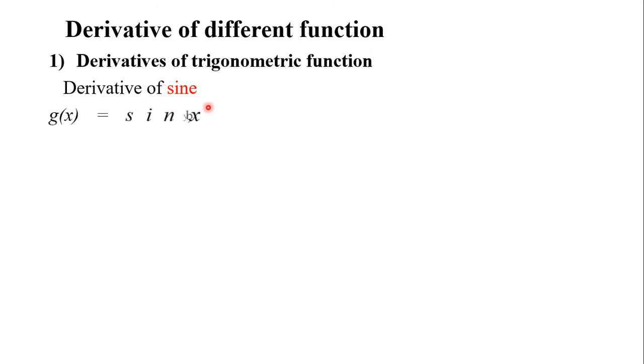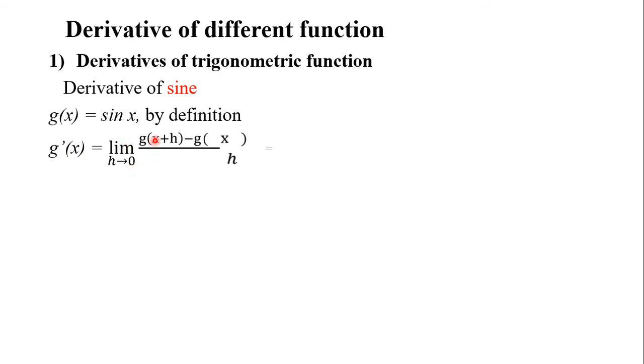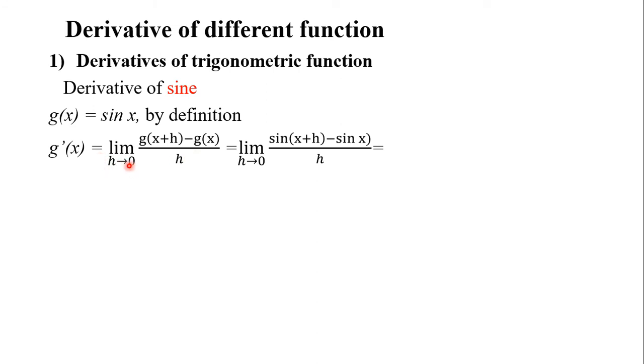Next is the derivative of trigonometric functions. Trigonometric functions include sine, cosine, and tangent. To find the derivative of sine, let g(x) = sin x. By definition, g prime at x is the limit of g(x + h) minus g(x) over h as h approaches 0.